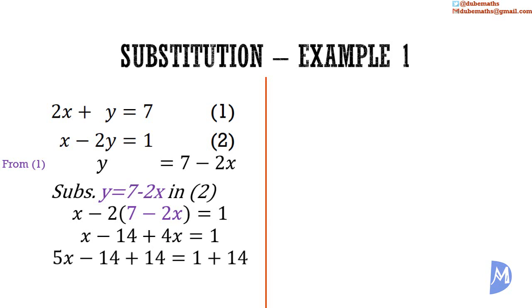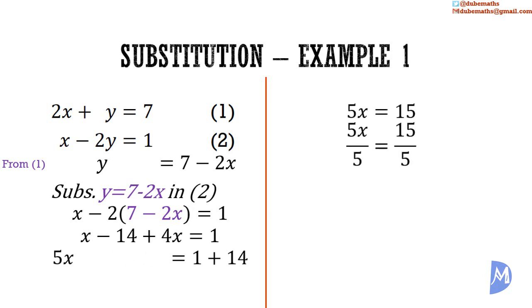We remove the negative 14 from the left-hand side by adding 14 to both sides. Negative 14 plus positive 14 is equal to 0, and 1 plus 14 is equal to 15. Dividing both sides by 5, the 5s cancel to leave x, and 15 divided by 5 is equal to 3. We get that x is equal to 3.